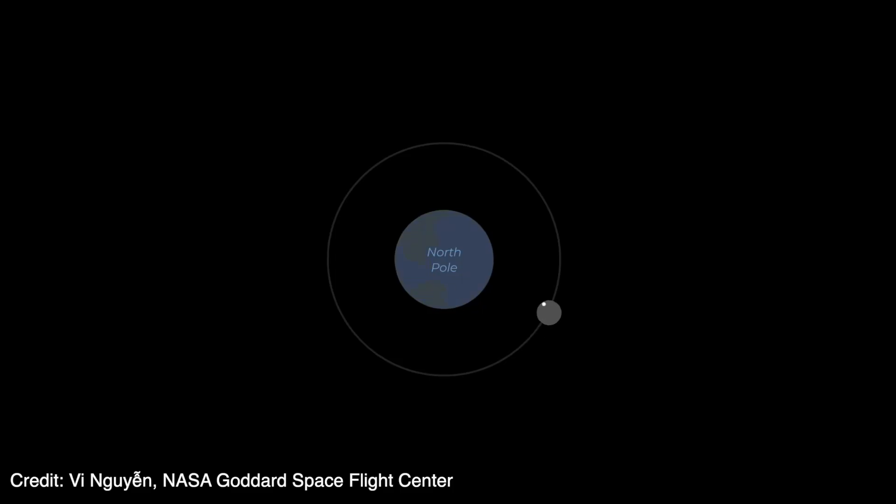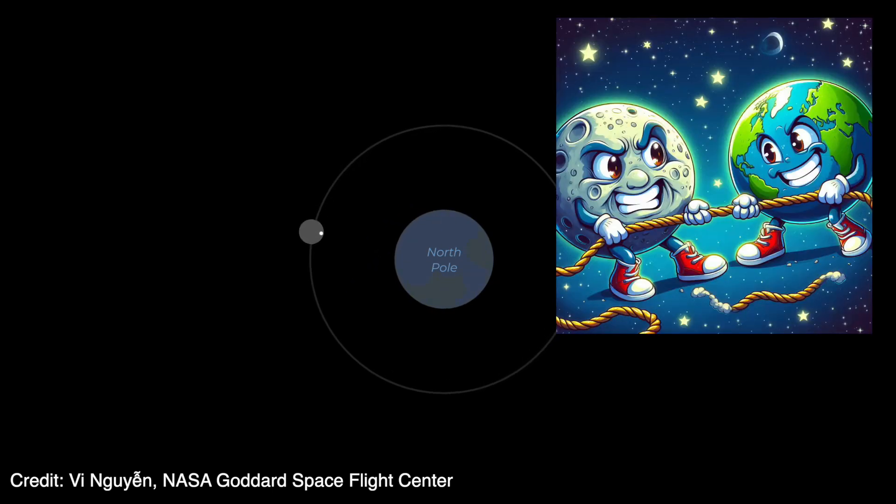And that's because the moon is tidally locked with Earth. It once rotated on its axis like this. But now, one side is permanently facing the Earth as it goes through the month. And that's because of the gravitational pull of both the moon and the Earth on one another.